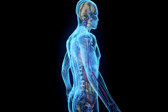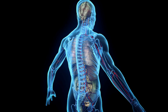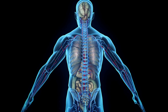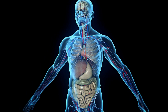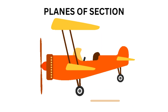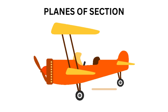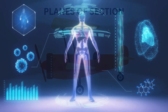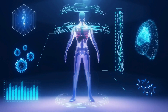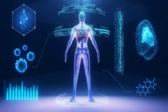These cavities serve as protective spaces, helping to prevent internal organs from external damage and providing support and structure to the body. Planes of section refer to imaginary flat surfaces that can be used to divide the human body or any three-dimensional structure into distinct portions for anatomical or medical purposes.